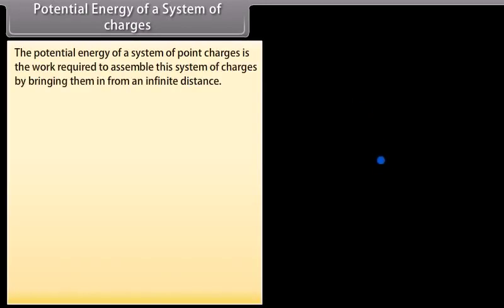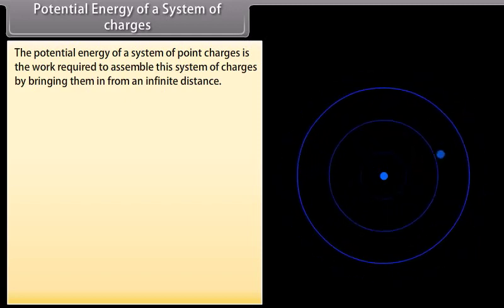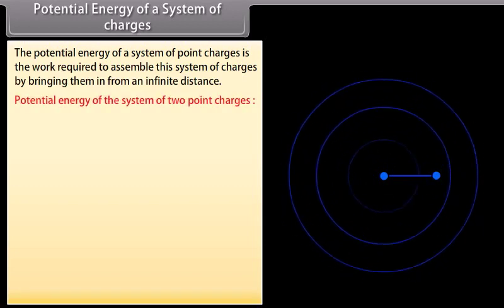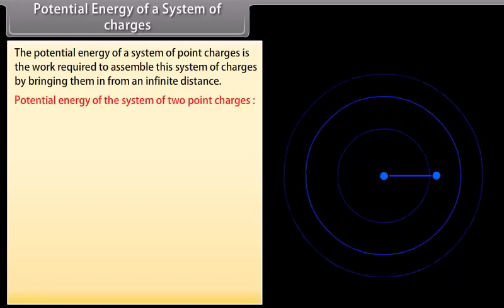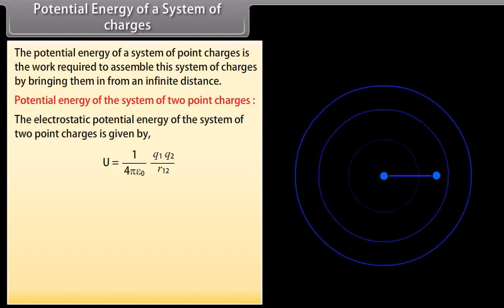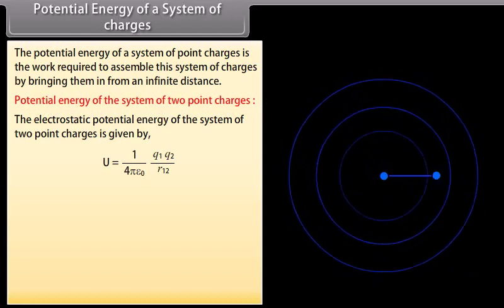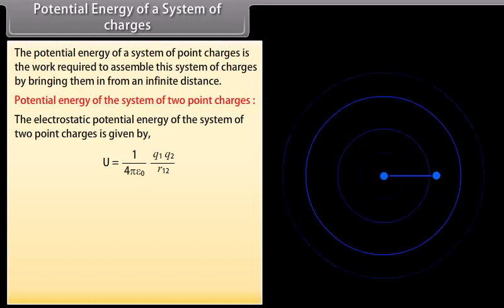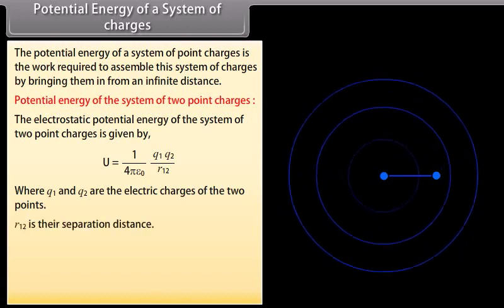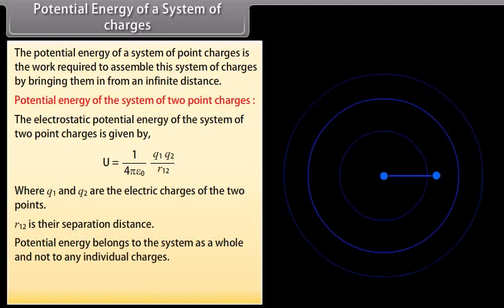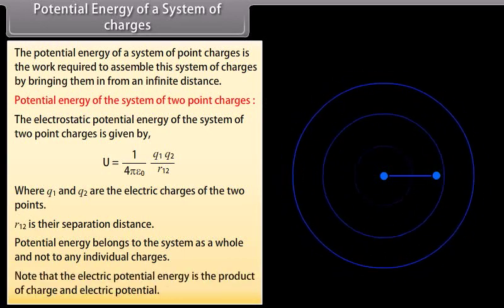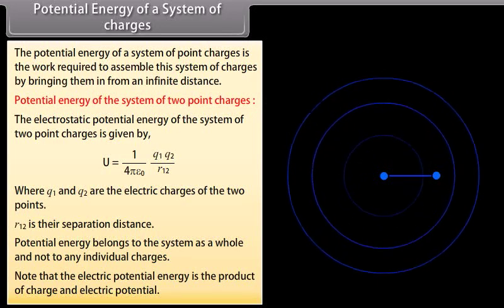The potential energy of a system of point charges is the work required to assemble this system of charges by bringing them in from an infinite distance. The electrostatic potential energy of the system of two point charges is given by U equals 1 upon 4π ε₀ multiplied by Q1 Q2 upon R12, where Q1 and Q2 are the electric charges and R12 is their separation distance. Potential energy belongs to the system as a whole and not to any individual charge. Note that electric potential energy is the product of charge and electric potential.